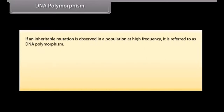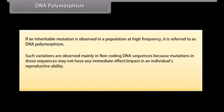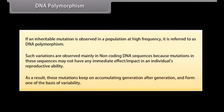If an inheritable mutation is observed in a population at high frequency, it is referred to as DNA polymorphism. Such variations are observed mainly in non-coding DNA sequences, because mutations in these sequences may not have any immediate impact on an individual's reproductive ability. As a result, these mutations keep on accumulating generation after generation and form one of the bases of variability.